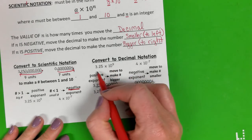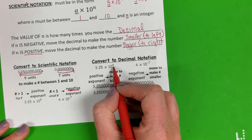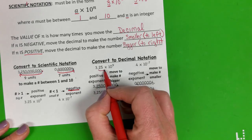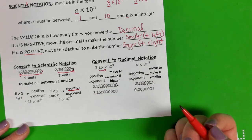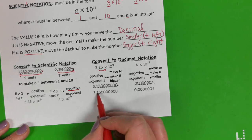Okay, and then if we're already in scientific notation, remember if our exponent is positive, we want to make our number bigger. So we're going to move our decimal 9 places to the right. Notice I don't have 9 zeros. I have 9 digits that I moved my decimal.